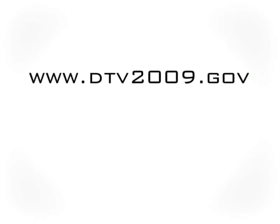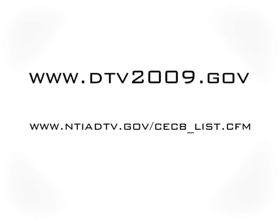For converter box coupons, you can go to dtv2009.gov and follow the instructions there. For a list of approved converter boxes, you can go to ntiadtv.gov backslash cecb underscore list dot cfm. These websites will be listed again at the end of the video, so be sure to stay tuned with the pen and paper ready.